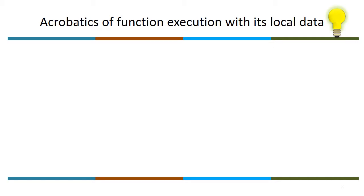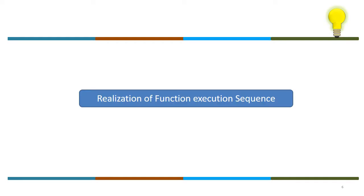Now we look at the realization of function execution sequence — how exactly it is implemented. When you think about realization, you think about the processor: you have the address of an instruction in the Program Counter (PC). The natural flow of a processor is continuous execution of instructions at subsequent addresses — the PC keeps incrementing. We need to curtail this flow when a function is invoked, causing an immediate jump of execution control to the called function and back when it completes.